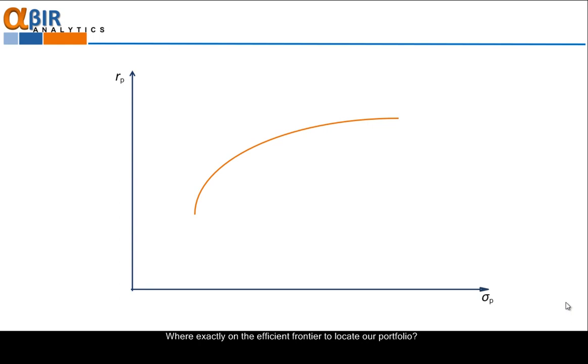Where exactly on the efficient frontier to locate our portfolio? Yes, we already know that our portfolio must be on efficient frontier. But it could be here, here, here or here. As we see, all these portfolios are on efficient frontier. Therefore, they are efficient. They are good. But all of them are different. It is not the same to invest in portfolio Y and portfolio Z, isn't it?